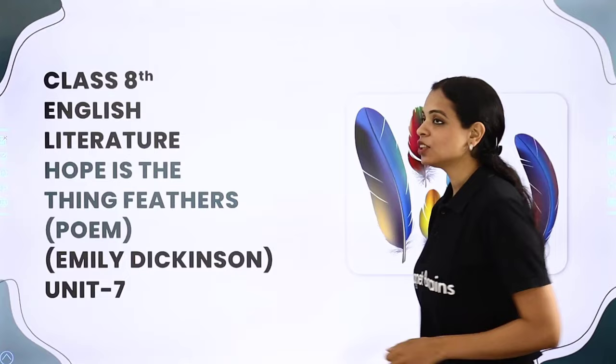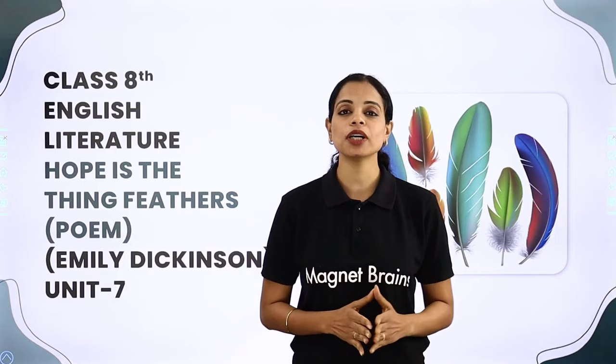On this positive note, we are going to start the 7th unit of our poem, Class 8 English Literature Gulmohar book. The name of the poem is 'Hope is the Thing with Feathers.'